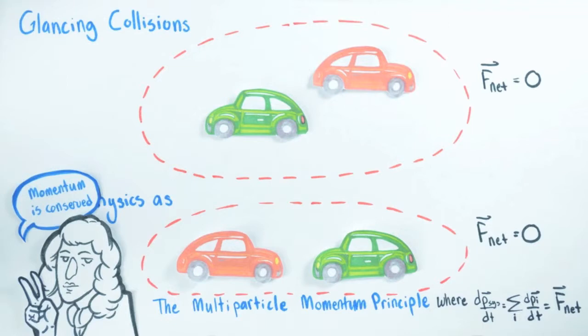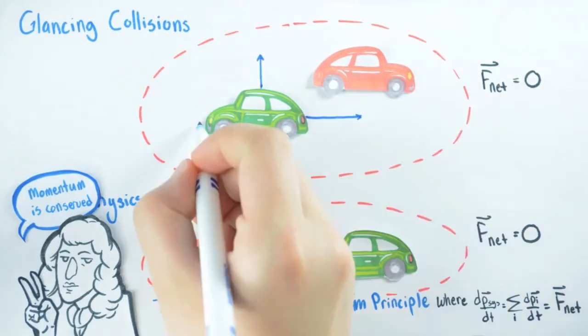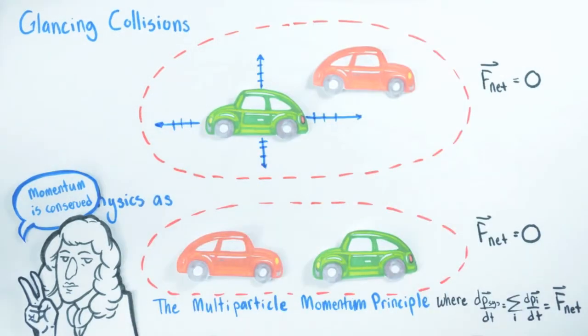The big difference here for a glancing collision is that we'll need to apply the idea of momentum conservation along every spatial direction where momentum vectors have non-zero components. So the general application of the principle is the same. We just need to do a bit more math to work this out in more than one spatial dimension.